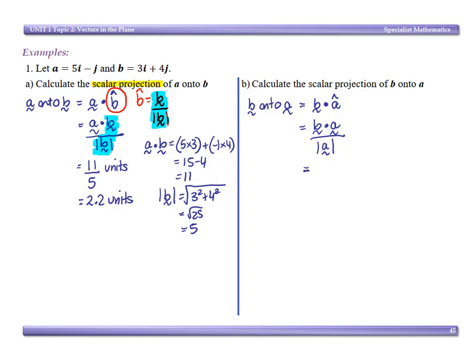So now I need the magnitude of a, which is going to be the square root of 5 squared plus negative 1 squared, which is the square root of 25 plus 1, which is the square root of 26.